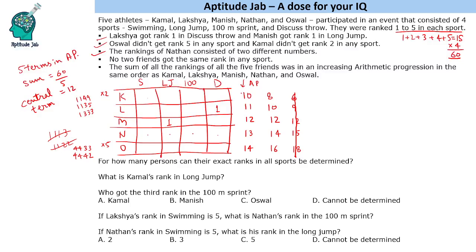Now we figure out the number of rank 5s that can be used. Oswald doesn't use rank 5, so rank 5 must appear exactly 4 times across the others. For Nathan, we need to give 13 total. If we give Nathan a 5, we need to make 8 in the remaining 3 using only 2 different numbers — but that's not possible. So Nathan also cannot get rank 5.